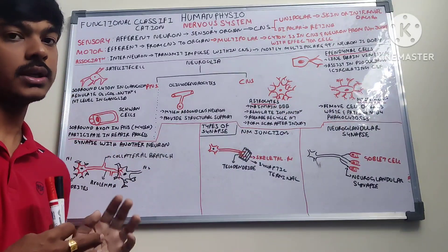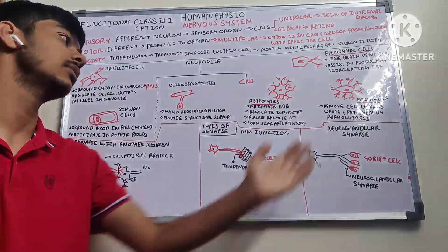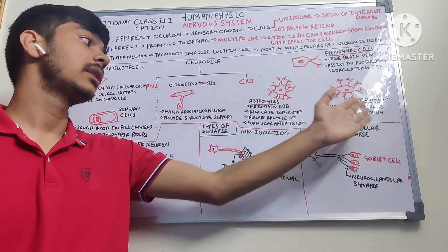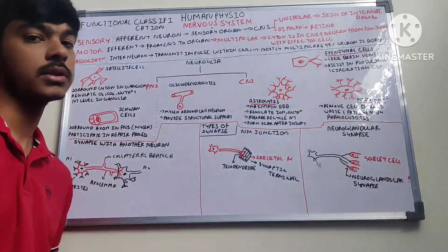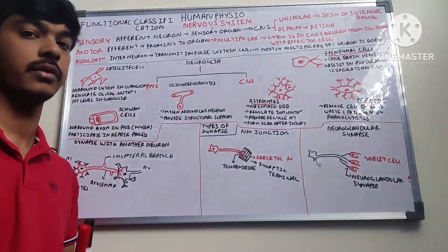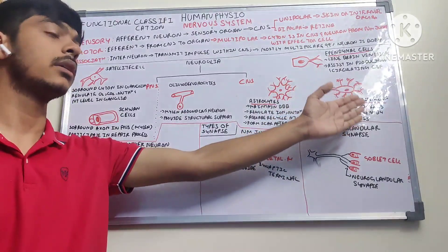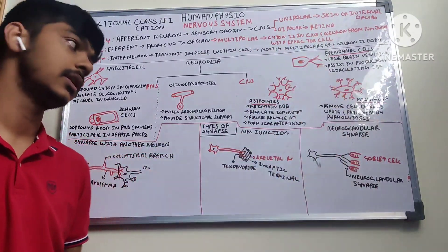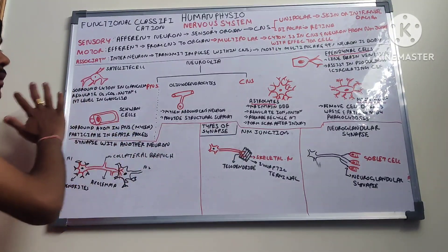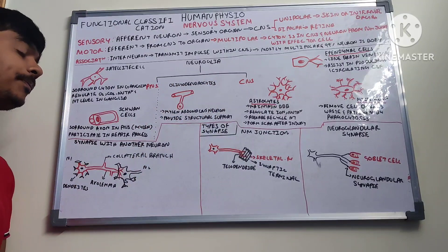Microglia, in simple words, is the WBC of the central nervous system. What they do is remove cell debris, waste, and pathogens by phagocytosis — the cell-eating phenomenon where the cell is completely engulfed after forming a vacuole. So microglia are basically the WBCs of the CNS.